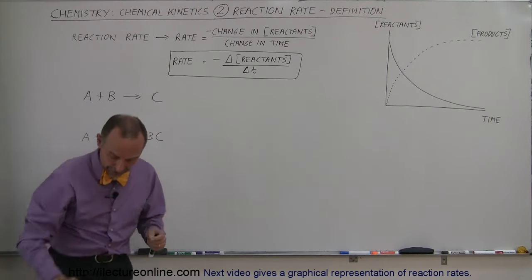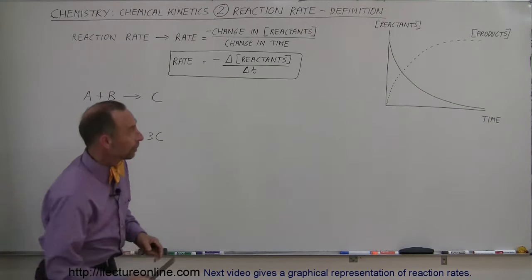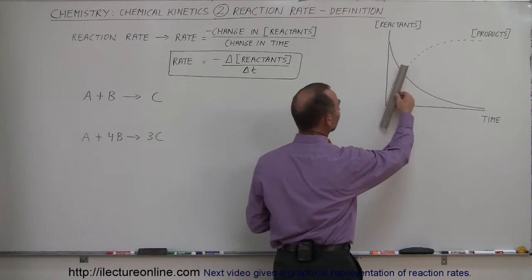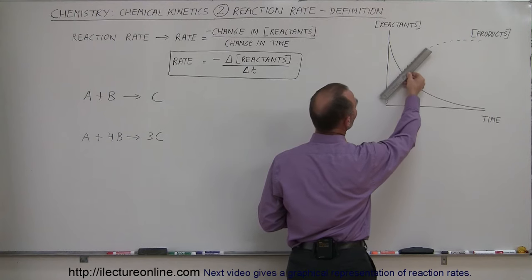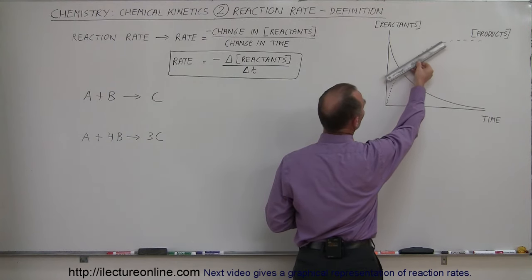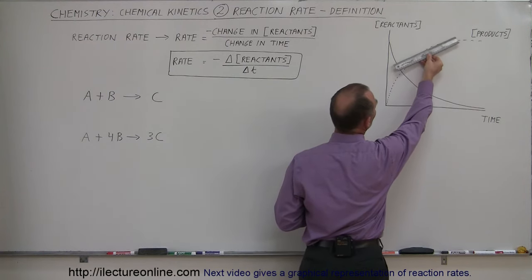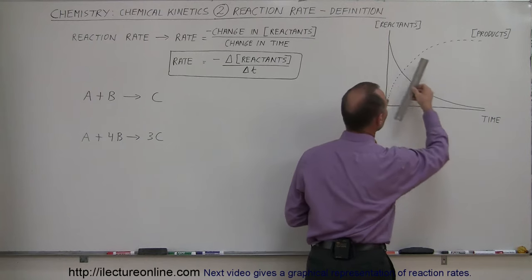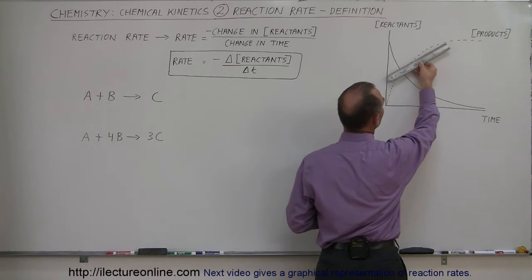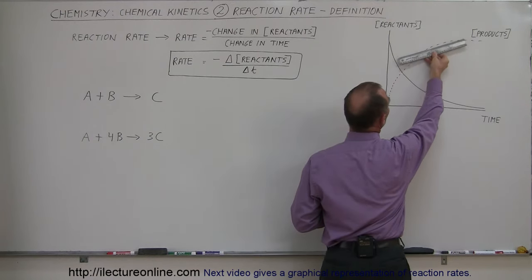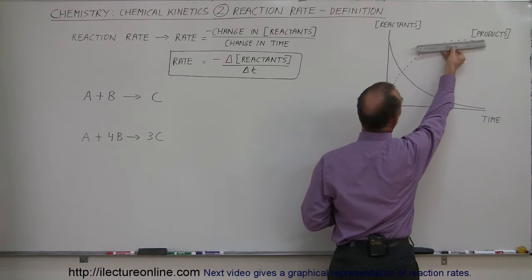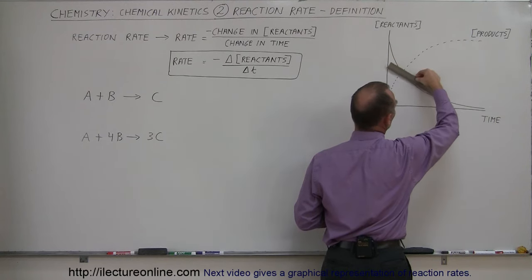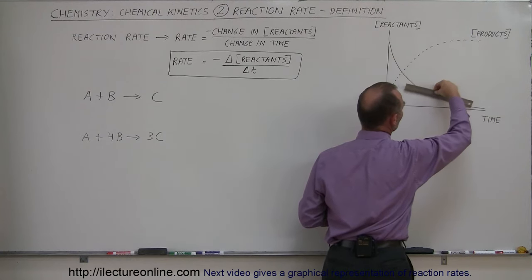The slope of that line — the steepness of that line — really represents how fast the reaction is taking place. As you can see, as time goes by, the reaction becomes slower and slower and slower.